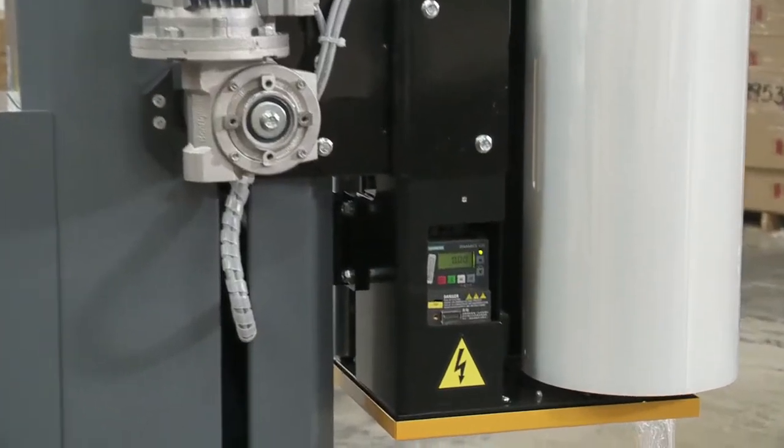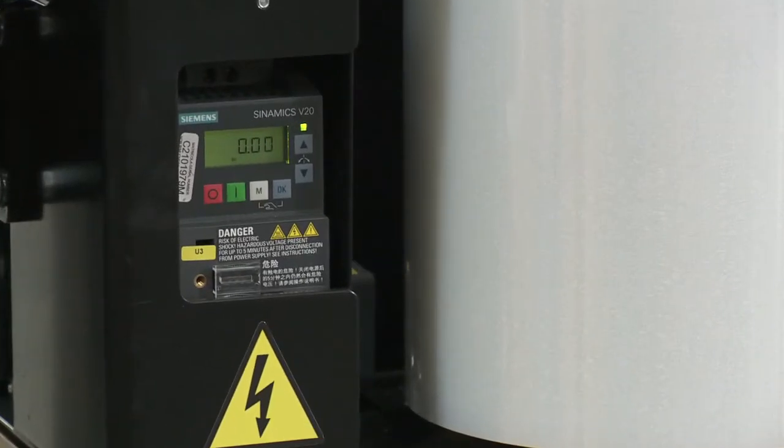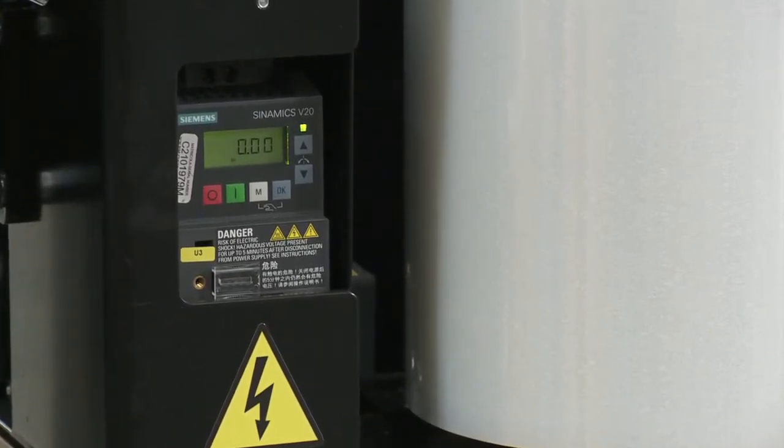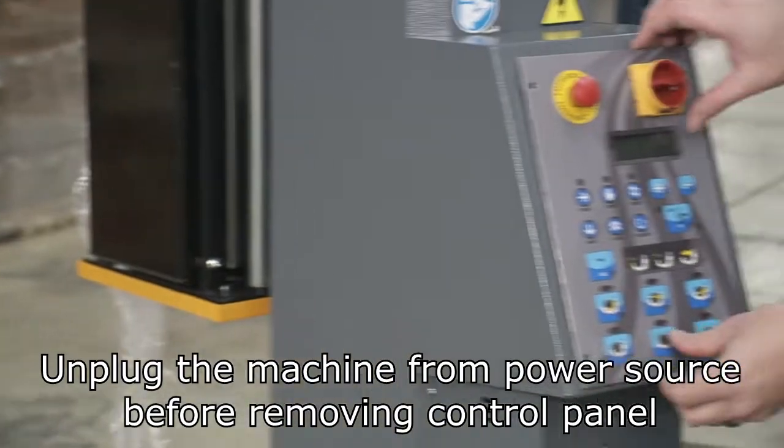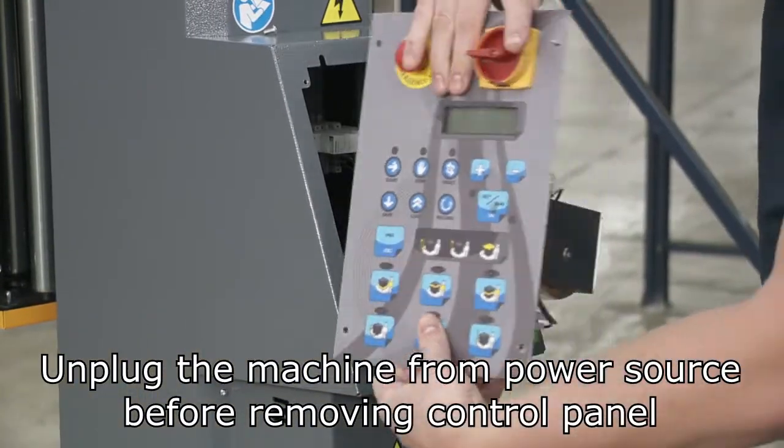Check to make sure the pre-stretch inverter has power. It is on the back of the film carriage and should power up on an initial reset. If there is no power to the inverter, it is possible that the connection is loose.